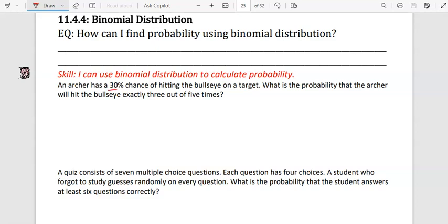An archer has a 30% chance of hitting a bullseye on a target. What is the probability that the archer will hit the bullseye exactly 3 out of 5 times?